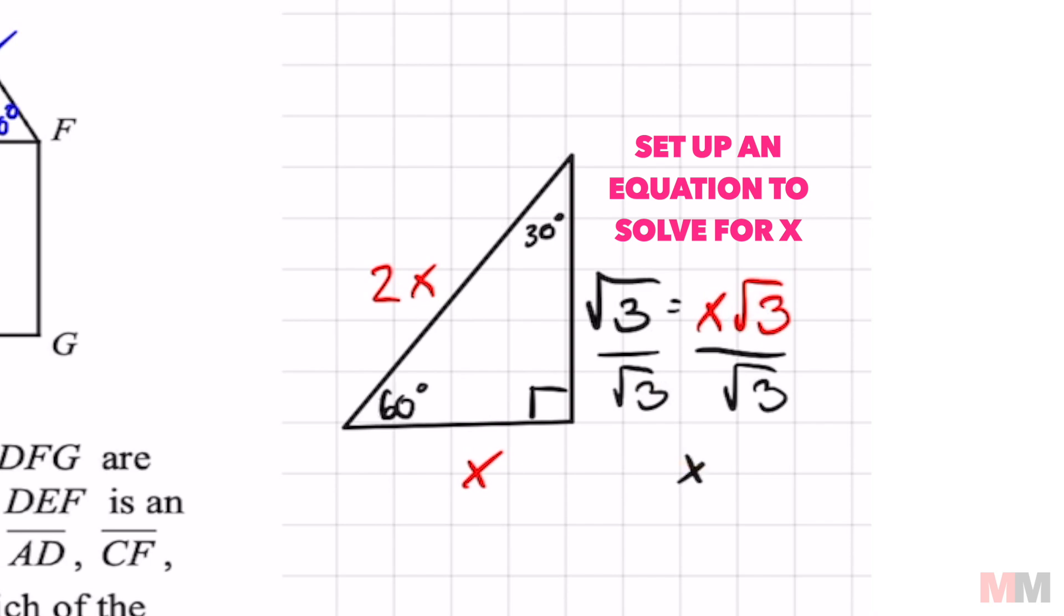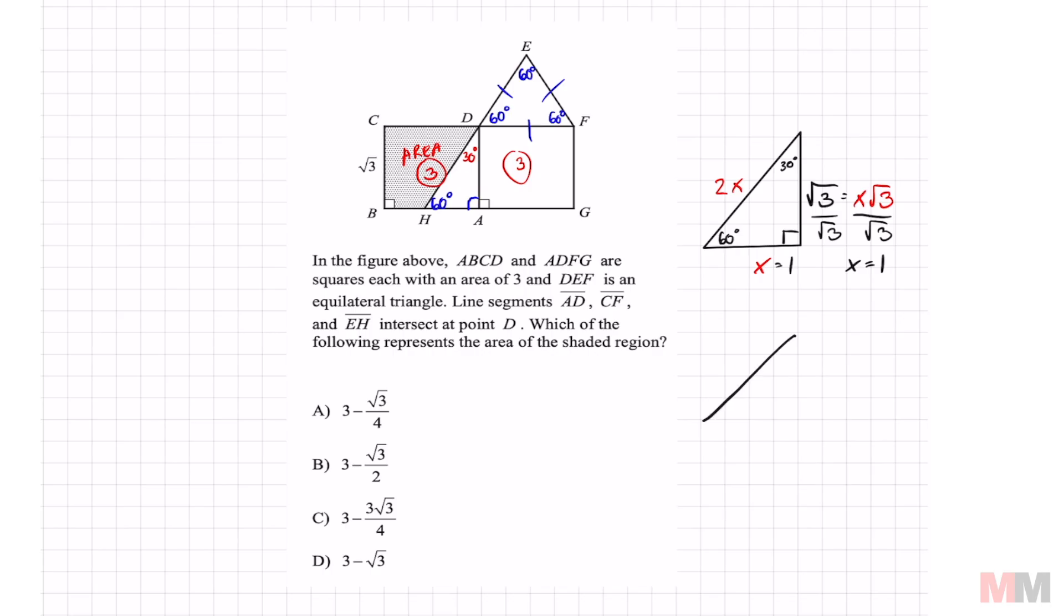In this problem, x will equal 1. I'm going to redraw that triangle again, because that one's all messed up. The base is 1, the height is √3. To find the area, it's just a half times 1 times √3. Or that's going to simplify to √3 over 2.